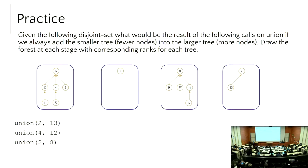The representative is seven. In this particular practice, we decide who absorbs whom by having the larger tree — the tree with more nodes — absorb the tree with the smaller set of nodes. So which set absorbs which after this first union? The seven set is going to absorb two.